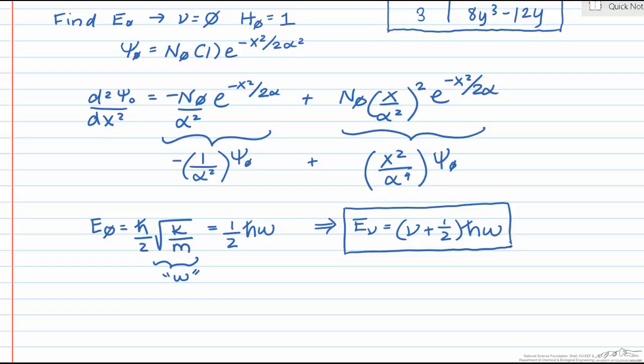One important note is that in this system the atoms are actually vibrating relative to one another. So a question you might ask is which mass should you use in order to predict the frequency of vibration? For diatomic molecules where there's only one mode of vibration, the effective mass μ is used. μ is equal to the mass of the first atom times the mass of the second atom divided by the sum of the two masses.